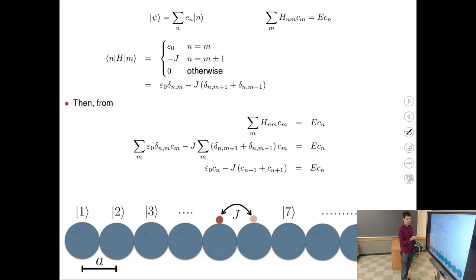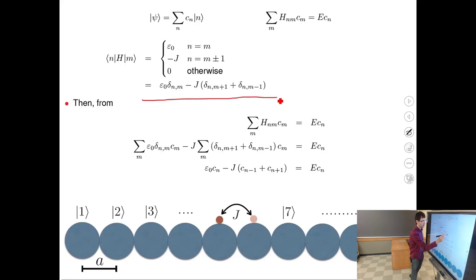First, let's write out this equation mathematically. To combine the three cases in one expression, we write a formula including all three: ε₀ when n equals m (via the Kronecker delta), and −j when n and m differ by plus or minus one. So for any given n and m, you look at this and determine which case applies, or put zero otherwise.